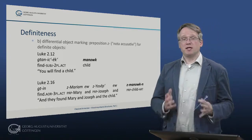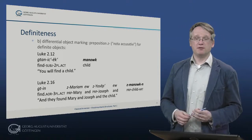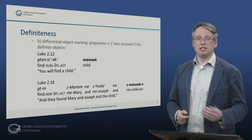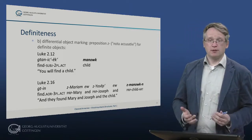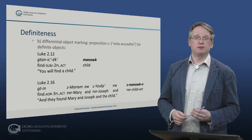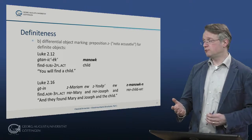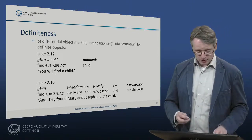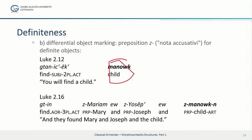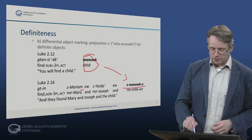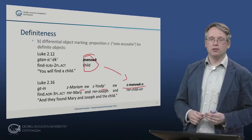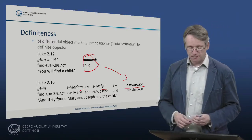The other way of marking definiteness in Armenian is on objects. Definite objects are additionally marked with a preposition z. This is the case when the referent has already been introduced into discourse, as in Luke 2:12 — getanitzik manuk — 'you will find a child'. And in Luke 2:16, a few lines later, 'they found Mary and Joseph and the child' — the one just introduced into discourse. Note that Maryam and Josep are definite noun phrases by definition as personal names, so they don't get the article attached to them.